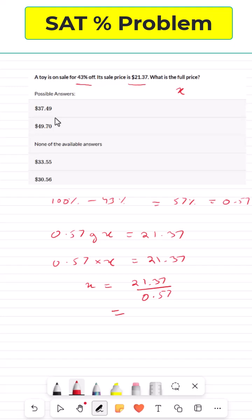This just gives us, once we divide this, 37.49. So $37.49 is the correct answer.